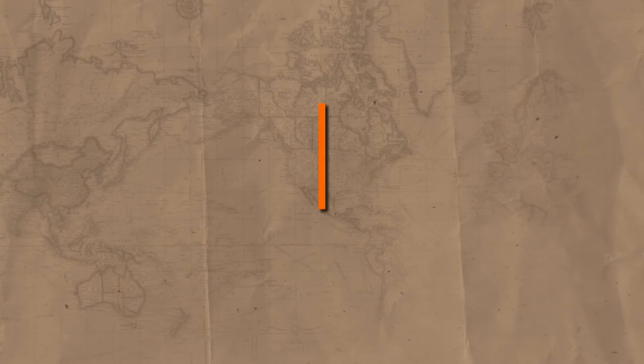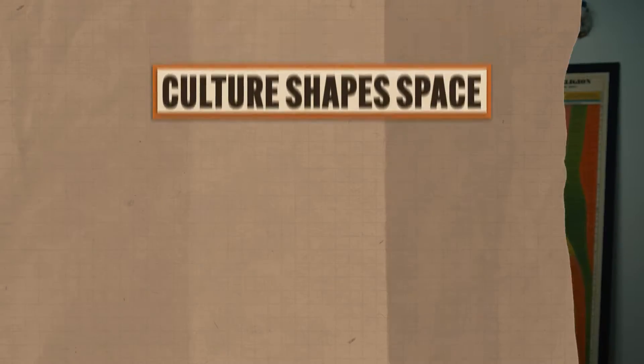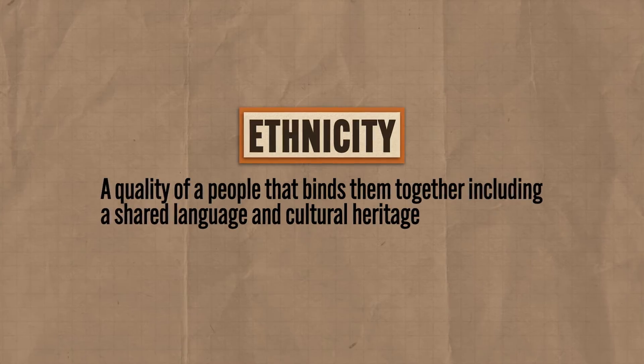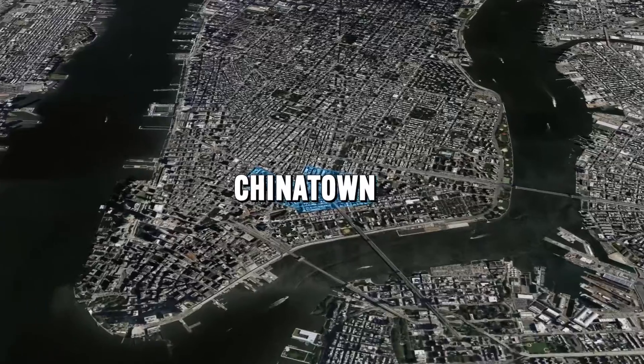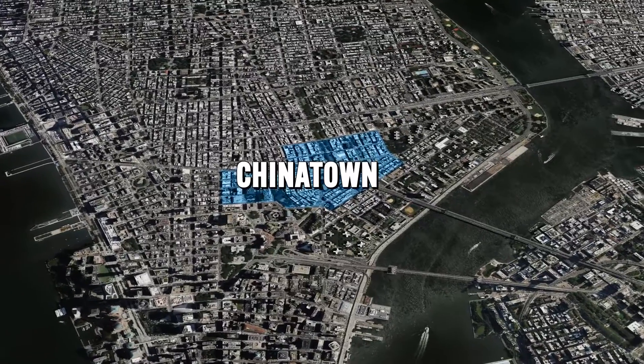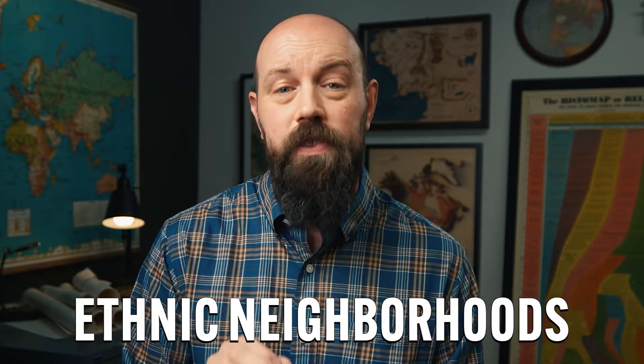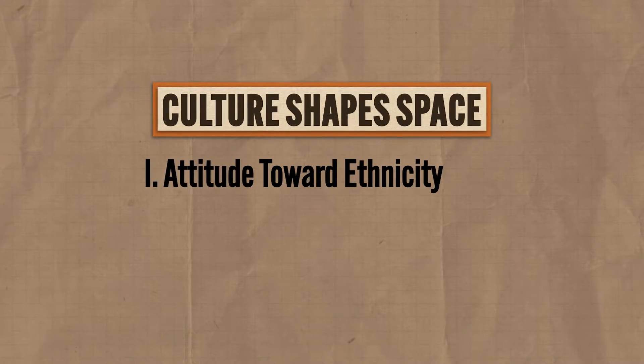We've considered how cultural landscapes tell us about the people who live in a place. Now, looking at it from the other side, let's consider how a society's values determine how they shape and modify their space — and there are three big factors. First, a society's attitude toward ethnicity affects how they occupy a space. Ethnicity is a quality of a people that binds them together, including a shared language and cultural heritage. A good example would be the various Chinatowns in New York City, which contain a high concentration of Chinese Americans and Chinese immigrants. The fact that Chinese populations are so concentrated in these neighborhoods — but not elsewhere — tells us there were periods of U.S. history when Americans weren't fond of Chinese immigrants. Due to that cultural pressure, Chinese people in New York clustered together in ethnic neighborhoods to preserve their own culture and traditions, which the dominant culture rejected. So attitudes about ethnicity shaped this spatial arrangement of the city.